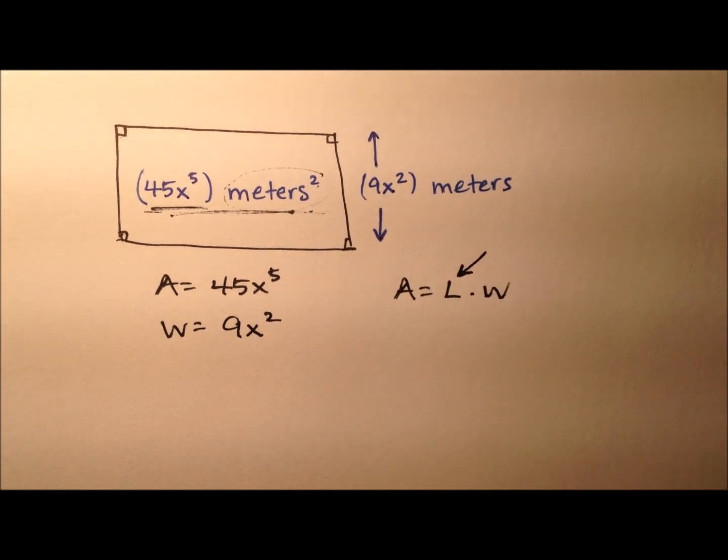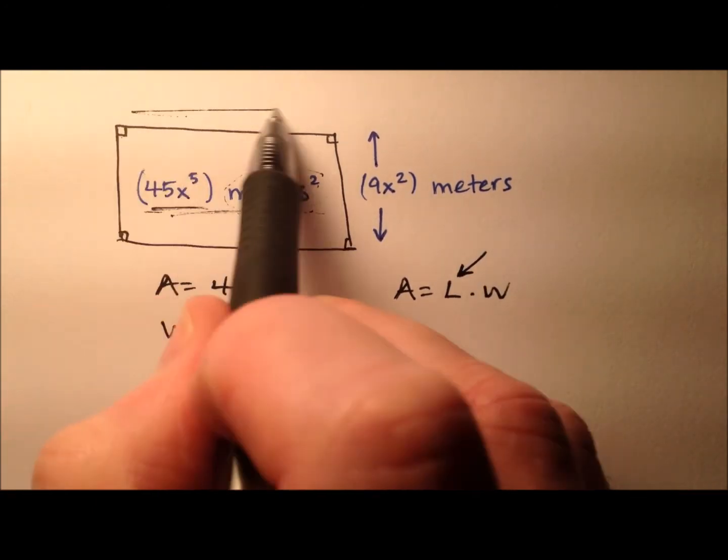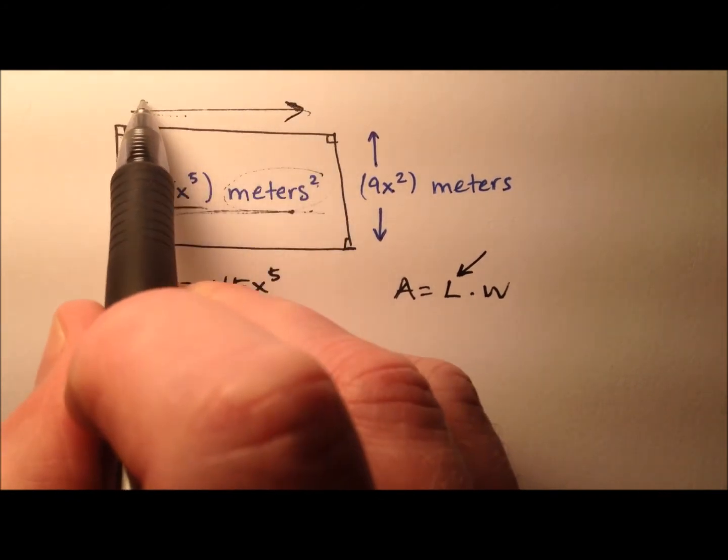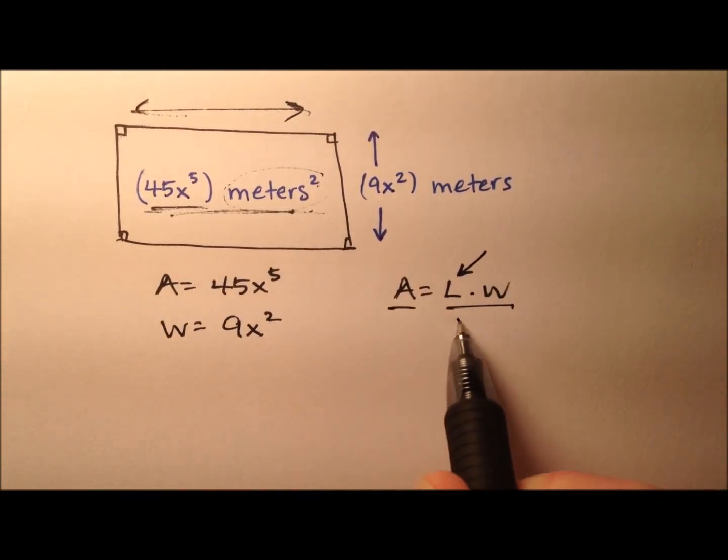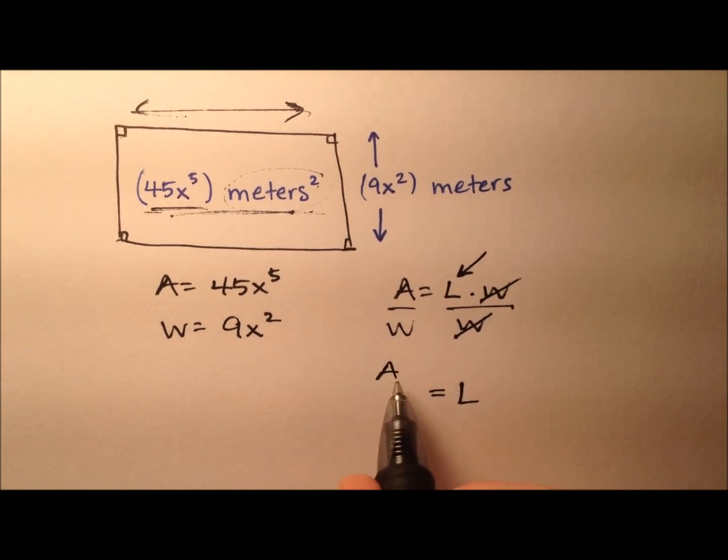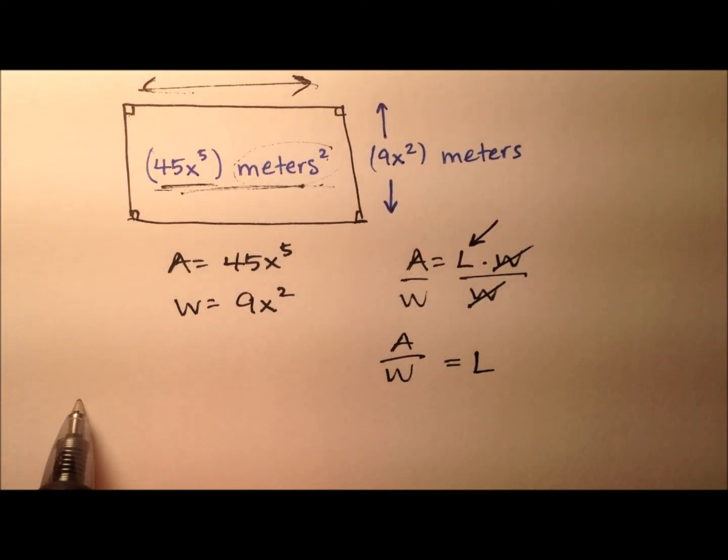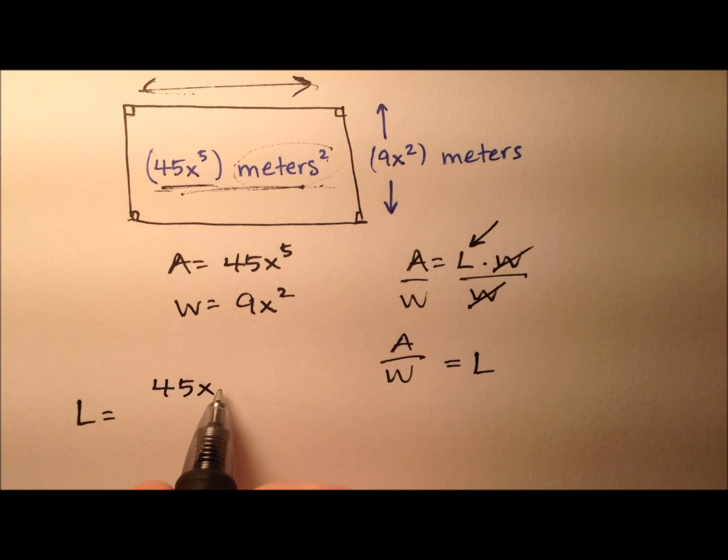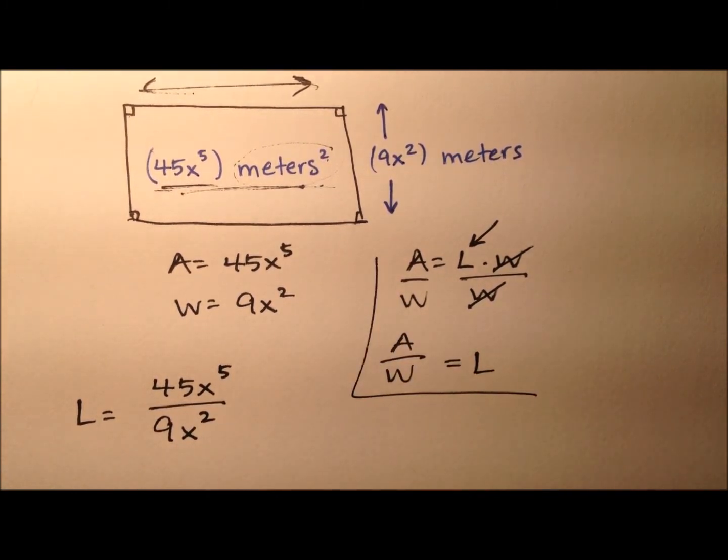To solve for the length, what we can do is divide both sides by w. These w's cancel and the length then equals the area divided by the width. The length equals the area which is 45x to the fifth divided by the width, which is 9x squared.